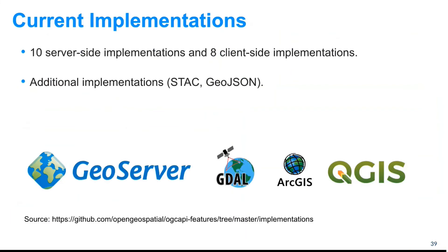OGC API Features already has a number of implementations, being one of the most mature OGC API standards. You can find 10 server-side implementations and eight client-side implementations. Among these, some are open source and others are proprietary. On the client side you can find desktop clients, SDKs, and libraries in different programming languages. The logos in the slide show some well-known software that already supports OGC API Features, at least part one.